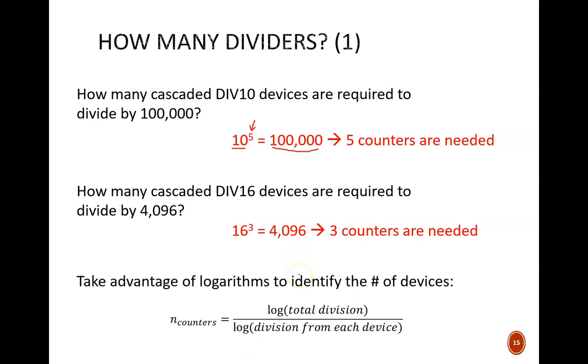The direct way to answer any of these questions is to use logarithms. I know logarithms are most students' fuzziest point from algebra class, and it was mine too, but they really are useful. Simply put, logarithms tell you the exponent. By using this formula, we can directly identify the number of counters. In the numerator, compute the logarithm of the total division needed, which would be 4096 in the previous question. In the denominator, compute the logarithm of the division produced by each device, which would be 16. Divide numerator by denominator, and you have your answer. Important note, this assumes that all devices use the same count, e.g., no mixing div 10 and div 16 devices.